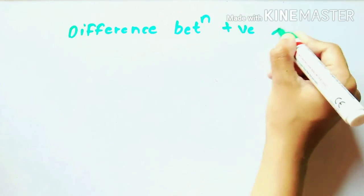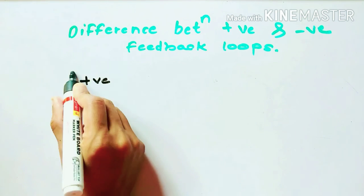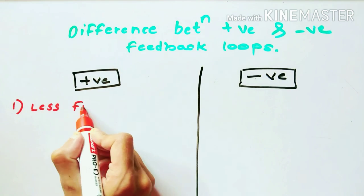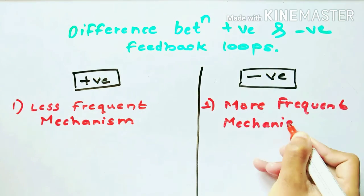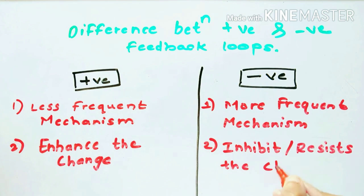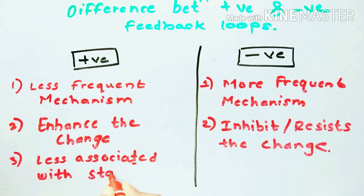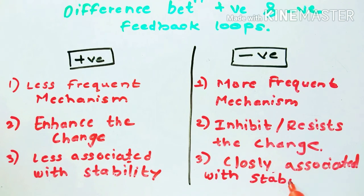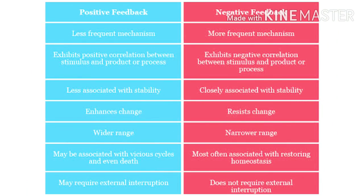Now let's study the differences between positive feedback and negative feedback. First, positive feedback is a less frequent mechanism whereas negative feedback is a more frequent mechanism. Second, positive feedback enhances the change whereas negative feedback inhibits or resists the change. Third, positive feedback is less associated with stability whereas negative feedback is closely associated with stability.